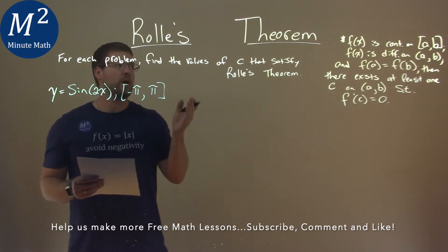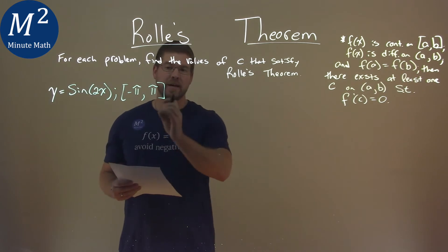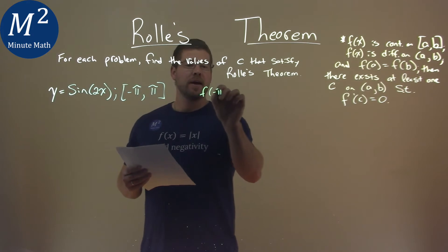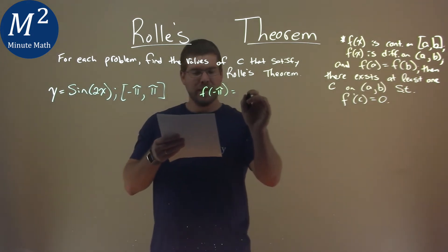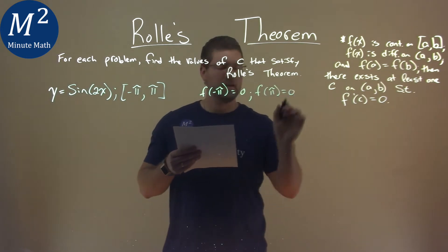Now, luckily for us, our function is continuous from negative pi to pi and differentiable from negative pi to pi. We want to find f of negative pi, and I found that for you, and that's zero, as well as f of pi is also equal to zero.